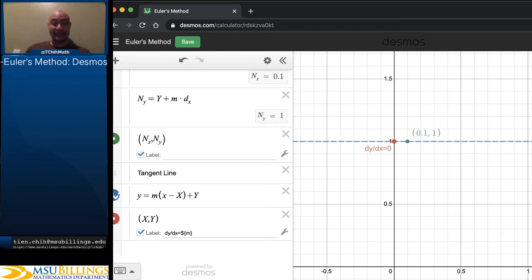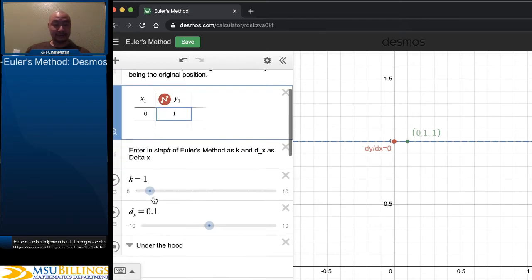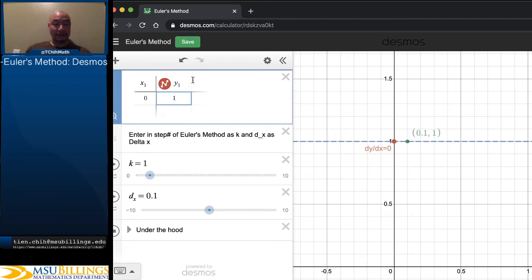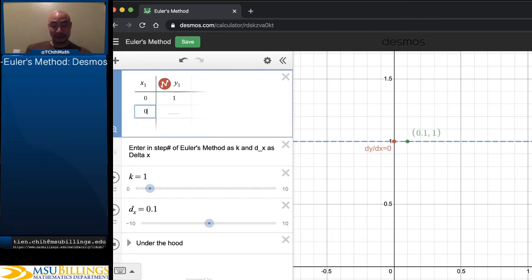And it plots the tangent line and it plots the slope of the tangent line at our current point. And so, just following this line, if our steps are of size 0.1, then our next point is (0.1, 1).